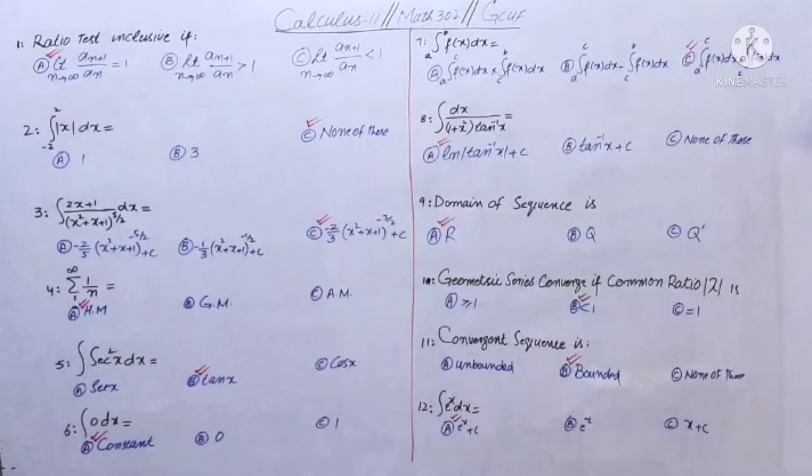We will be discussing the MCQ solution of calculus 2nd Math 302 GC University Faisalabad outline paper. These MCQs repeated mostly in online exam of GC University Faisalabad. Total 60 MCQs online paper is conducting and have to attempt all MCQs. This is my second video on MCQs of Math 302 Calculus 2nd.